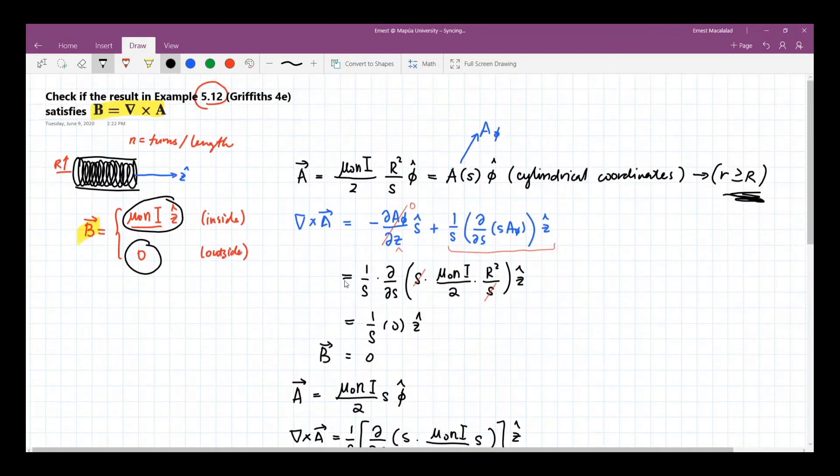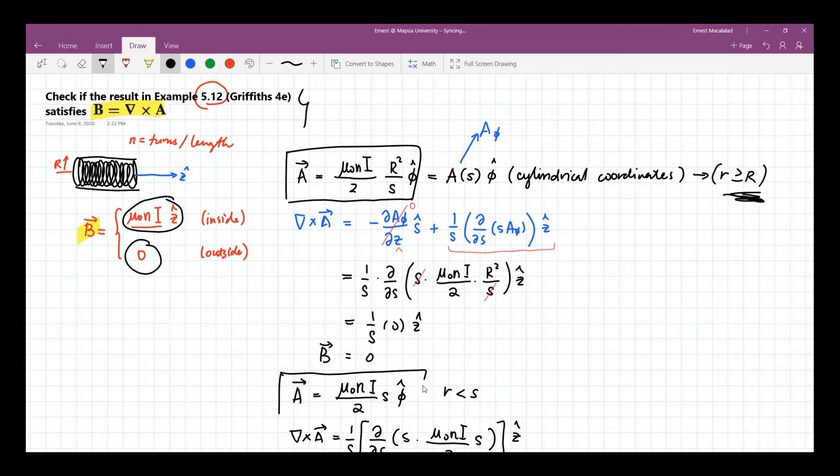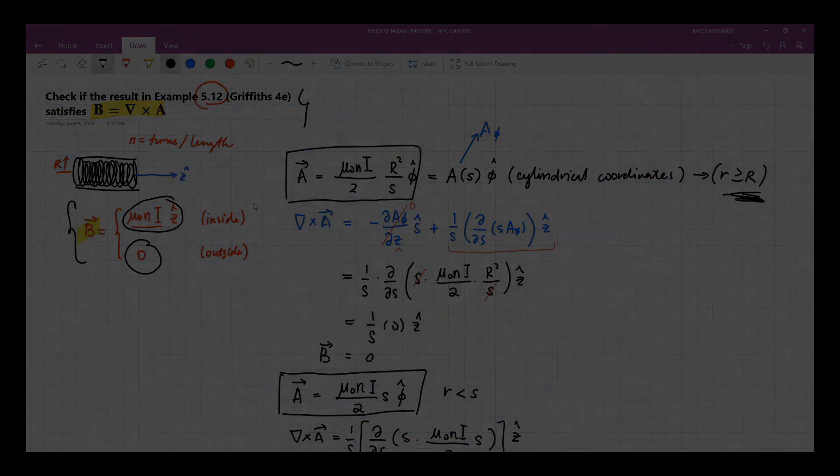So that ends our solution for this typical example, where we just verified that the resulting magnetic vector potential both for inside and outside the solenoid will yield this magnetic field.